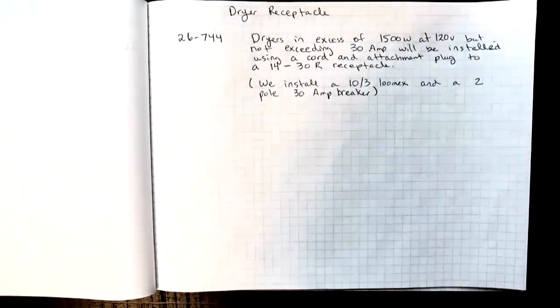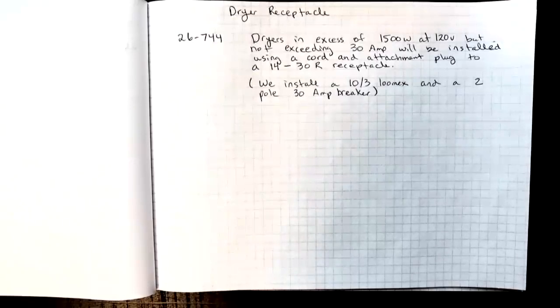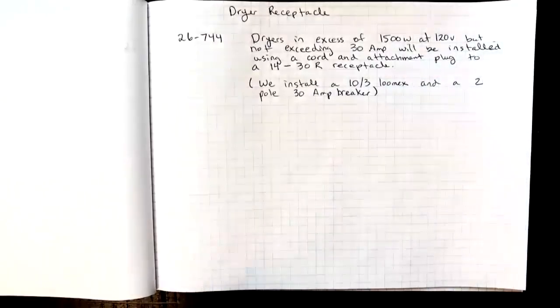The dryer in excess of 1500 watts at 120 volts but not exceeding 30 amps will be installed using a cord and attachment plug and a 14-30R receptacle. We install a 10/3 Lumex and a 2-pole 30 amp breaker to feed this dryer.